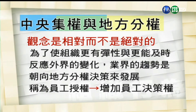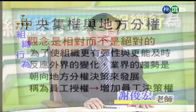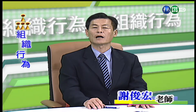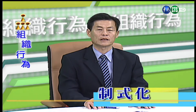为了让组织更有弹性，以及更能及时反映外界的变化，业界的趋势是朝向地方分权的决策来发展，这种方法我们称为员工的授权。特别是在较大的公司，一个基层管理者如果能更接近执行面，通常会比高阶管理者更能了解问题所在，而且能提出解决问题的方法。